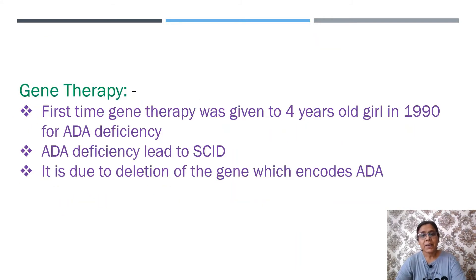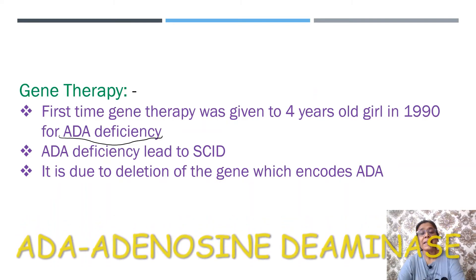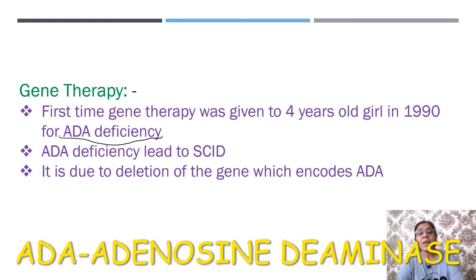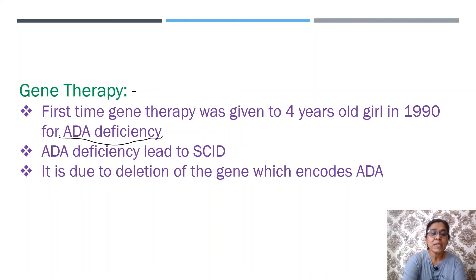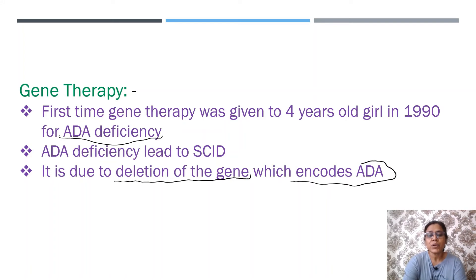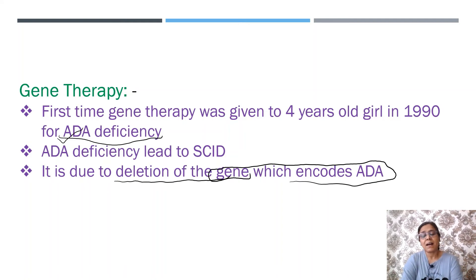The first time gene therapy was given was to a four-year-old girl in 1994, for ADA deficiency. ADA is an enzyme called adenosine deaminase. Its deficiency leads to SCID — severe combined immune deficiency disorder. This ADA deficiency occurs due to deletion of the gene which encodes ADA.